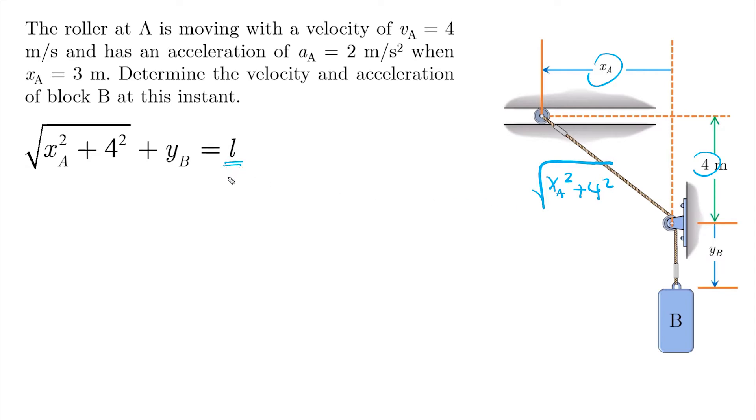To find the velocity and acceleration of block B, we need to differentiate this equation twice to find y dot B, which is vB, and y double dot B, which is aB.